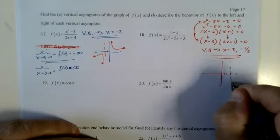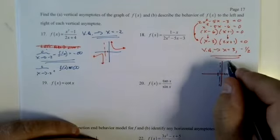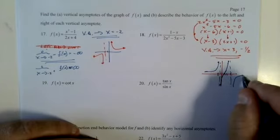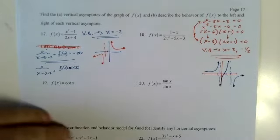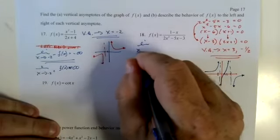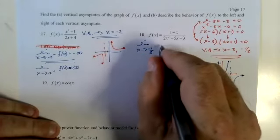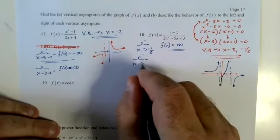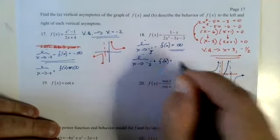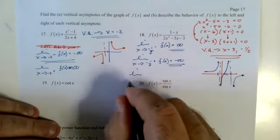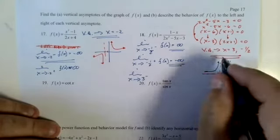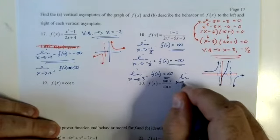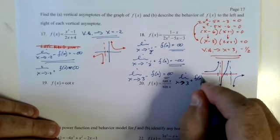Graphing it, I see something like this — and based on that: limit as x approaches negative 1/2 from the negative side, f(x) equals positive infinity. Limit as x approaches negative 1/2 from the positive side, f(x) equals negative infinity. Limit as x approaches 3 from the negative side, f(x) equals positive infinity. And limit as x approaches 3 from the positive side, f(x) equals negative infinity.